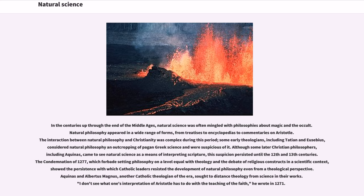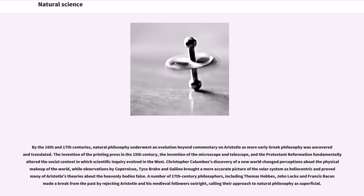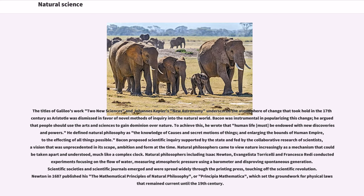By the 16th and 17th centuries, natural philosophy underwent an evolution beyond commentary on Aristotle as more early Greek philosophy was uncovered and translated. The invention of the printing press in the 15th century, the invention of the microscope and telescope, and the Protestant Reformation fundamentally altered the social context in which scientific inquiry evolved in the West. Christopher Columbus's discovery of a new world changed perceptions about the physical makeup of the world, while observations by Copernicus, Tycho Brahe and Galileo brought a more accurate picture of the solar system as heliocentric and proved many of Aristotle's theories about the heavenly bodies false. A number of 17th century philosophers, including Thomas Hobbes, John Locke and Francis Bacon made a break from the past by rejecting Aristotle and his medieval followers outright.